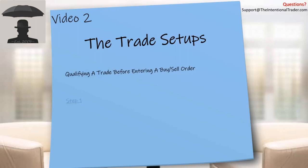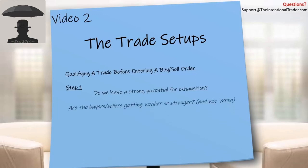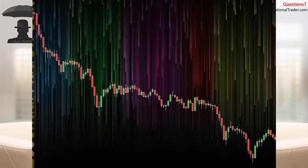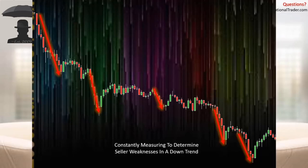We qualify our trades in steps. Step one: do we have a strong potential for exhaustion? Weakness always follows strength, so if we measure strength we can anticipate how long that strength will or can possibly last. We use this information to help us enter short-term trading positions, while others use it to scale out of longer-term positions. We're constantly measuring to find weakness in a downtrend — to determine where sellers are getting weak inside of a downtrend.